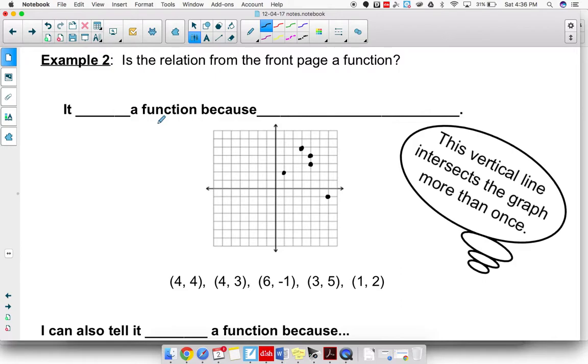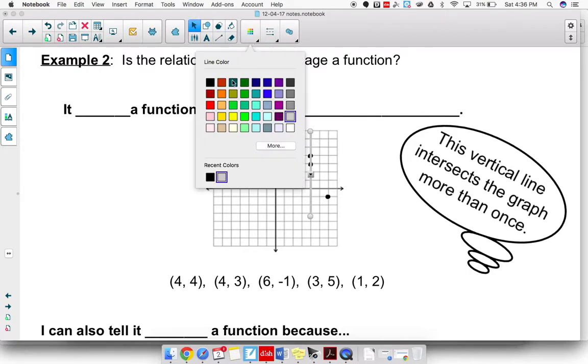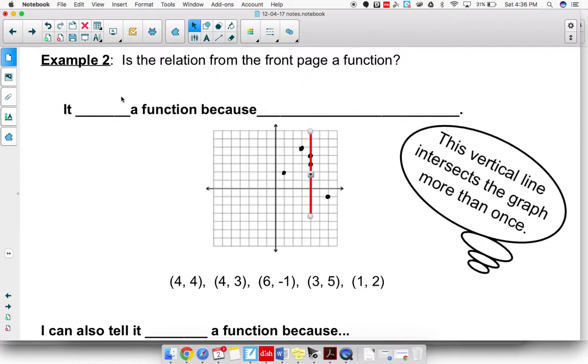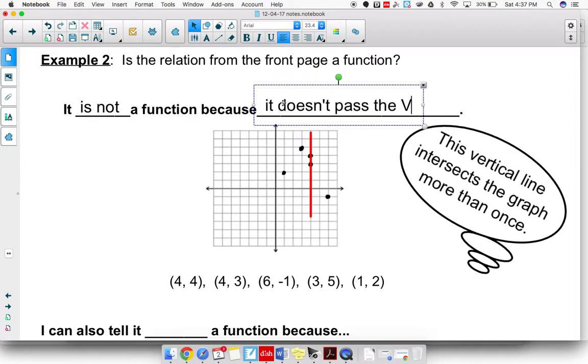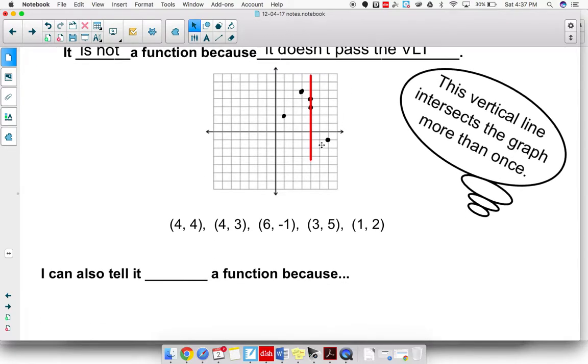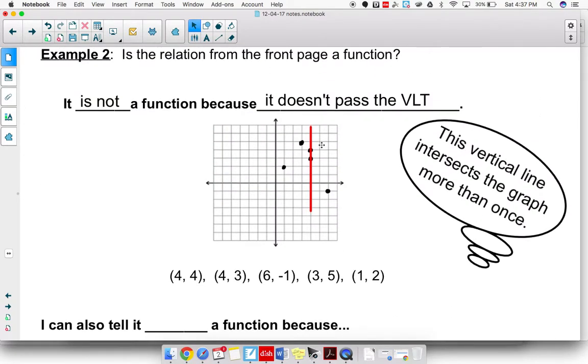On the backside of your handout, you're going to see just an explanation of is this a function or is it not? And the one that's kind of obvious is this vertical line test. And we've been talking about that for a little while. If you draw a vertical line anywhere on the graph and it intersects the graph in more than one position, then it's not a function. So I'm going to say up here, it is not a function. And the reason it is not a function is because it doesn't pass the vertical line test. And I'm just going to abbreviate that VLT.